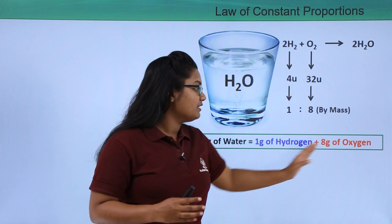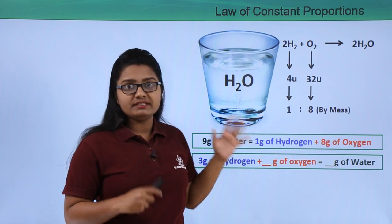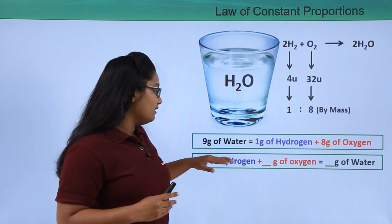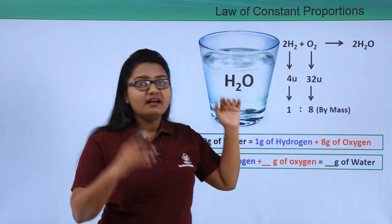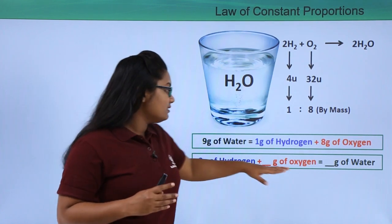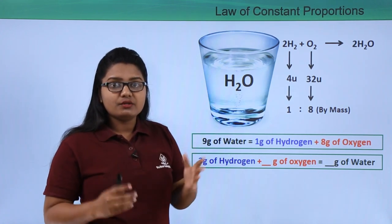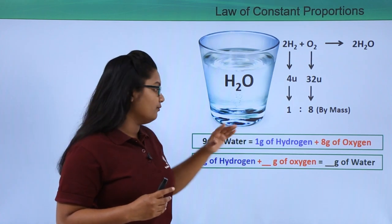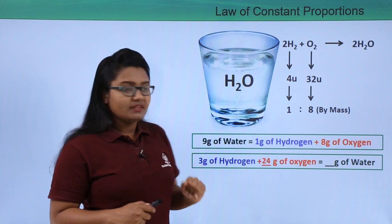If we have 3 grams of hydrogen, how much oxygen is required to form water? Since hydrogen and oxygen must be in the ratio 1:8, the oxygen quantity must be 8 times the quantity of hydrogen. So, 3 grams of hydrogen requires 3 × 8 = 24 grams of oxygen.